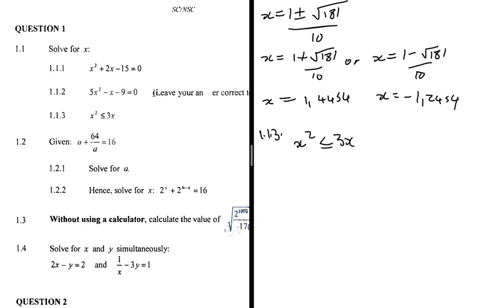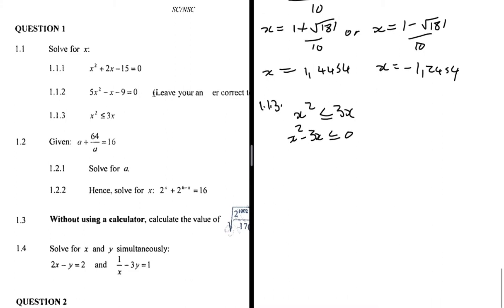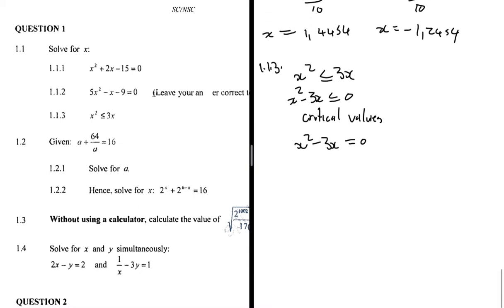I subtract 3x from both sides to get x² - 3x ≤ 0. To find the critical values I set x² - 3x = 0, factor out x to get x(x - 3) = 0, giving critical values x = 0 or x = 3.